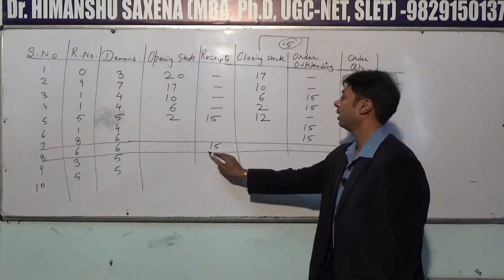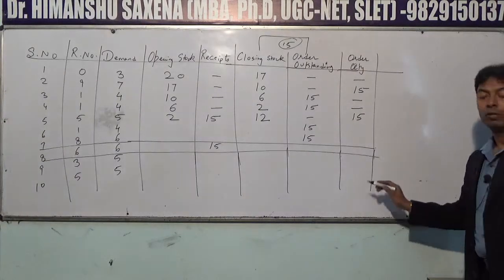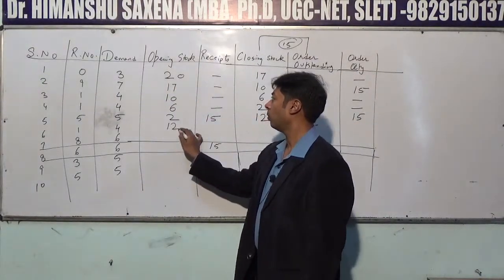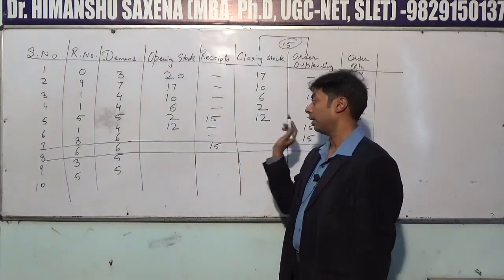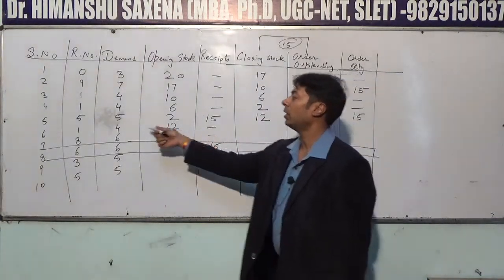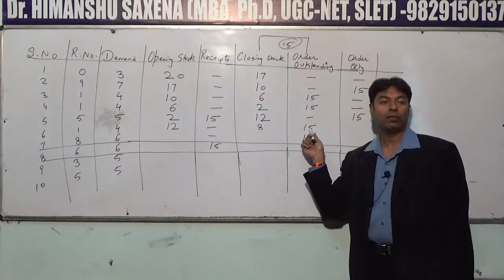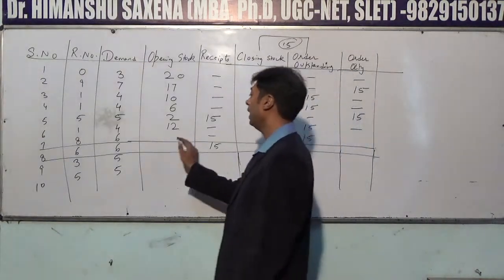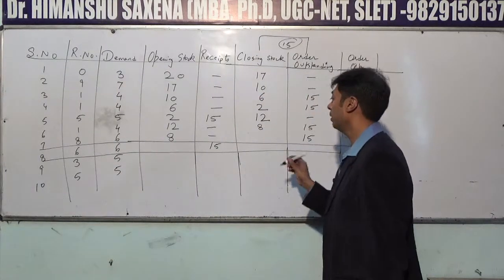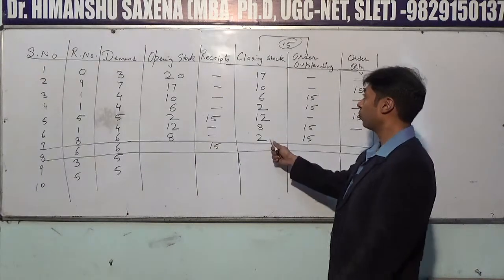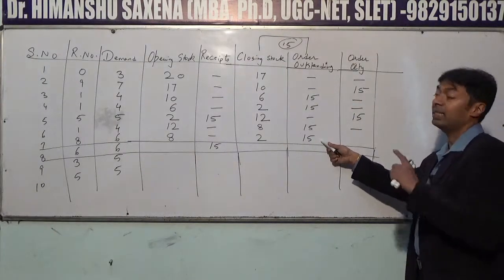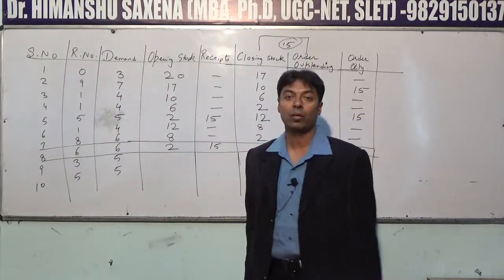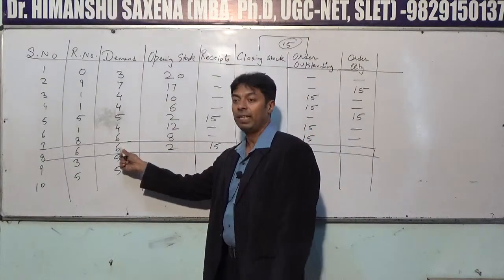Day 5: Opening stock is 2 (from day 4 closing), and the 15-unit order placed on day 2 is received today — receipts = 15. Closing stock = 2 + 15 − 6 = 11... actually 8. Then on day 6: opening 8, demand 4 subtracted gives closing 4 — but 4 + 15 outstanding = 19, greater than 15, so no order. Day 7: opening 2, closing after demand gives closing stock with no new order needed.